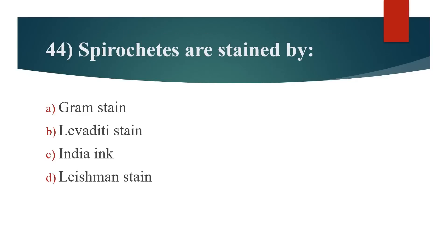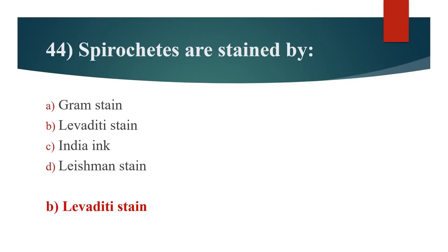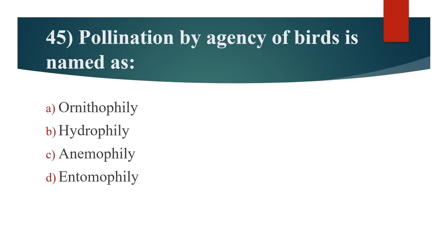44th question: Spirochetes are stained by? Option A: Gram stain. Option B: Levaditi stain. Option C: Indian ink. Option D: Leishman stain. Answer is Option B: Levaditi stain.